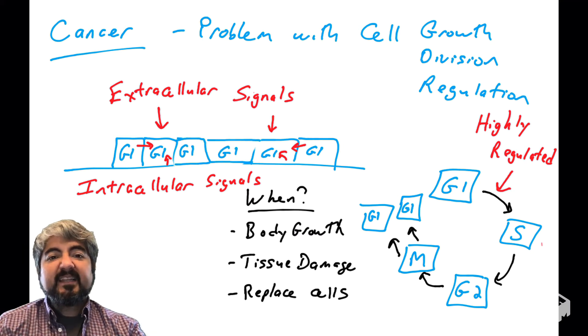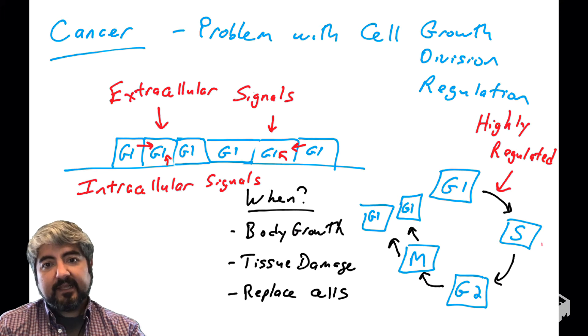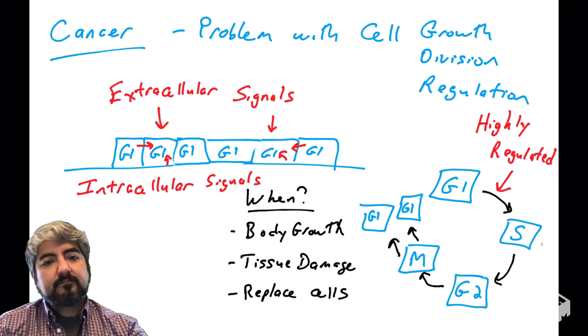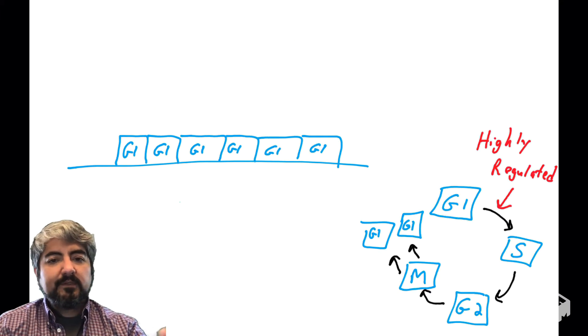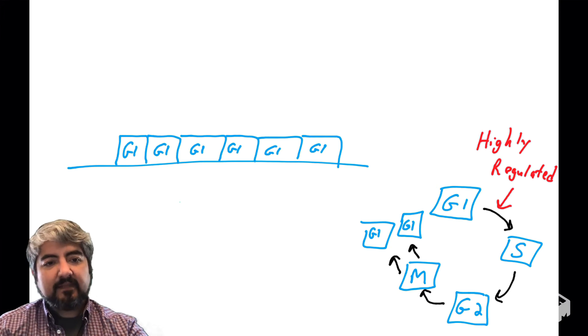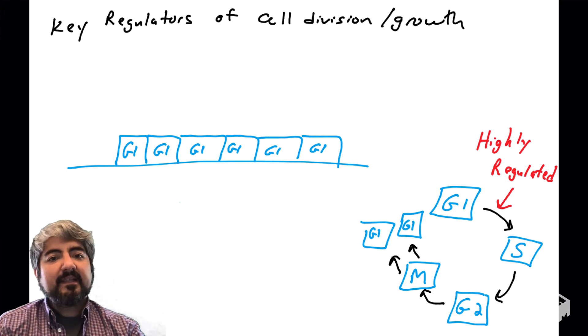So when cells get a signal to go through the cell cycle, we'll go from G1 to S to G2 to M, make daughter cells, and fill in that location. Okay, so if this is the process of the cell cycle that is highly regulated, what regulates it?